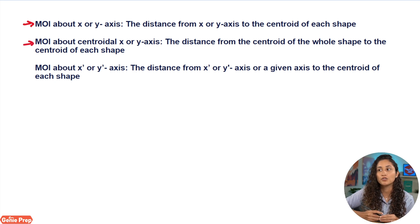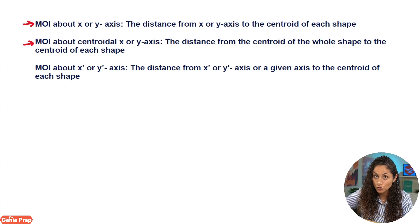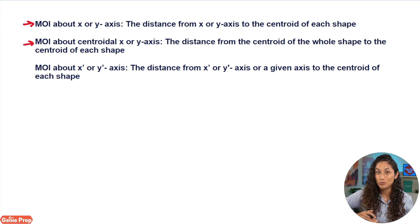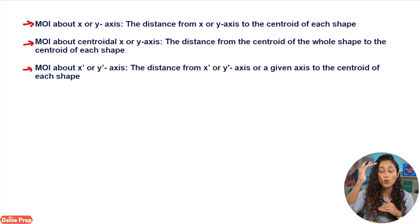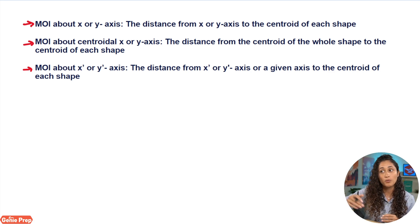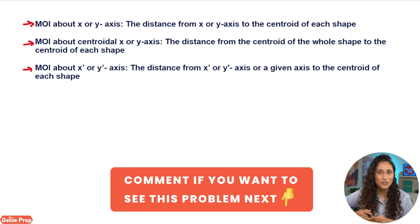The second case is moment of inertia about the centroidal X or Y axis. DY is the distance from the centroid of the whole shape to the centroid of each shape — and often you'll need to find the centroid of the whole shape first, which we covered in the previous problem. Lastly, for moment of inertia about X-prime or Y-prime, DY or DX is the distance from the X-prime or Y-prime axis to the centroid of each shape. If you're interested in that problem, let me know in the comments and I'll make a video on it.